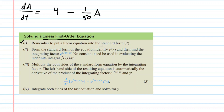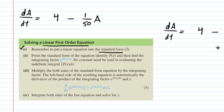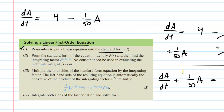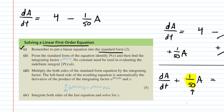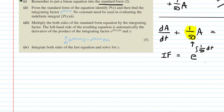To solve it, we first must put the equation into standard form. We rewrite the equation and add one-fiftieth A to both sides, which cancels it on the right-hand side. Now it's in standard form. The next step is to find an integrating factor. Whatever function is being multiplied by the dependent variable A serves as the basis. The integrating factor, abbreviated IF, equals e to the power of the integral of that expression — in this case, integrating one-fiftieth with respect to time gives e to the power of t over 50.